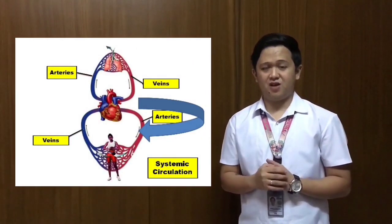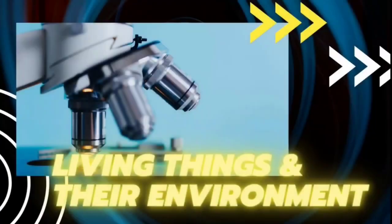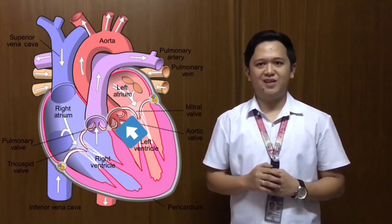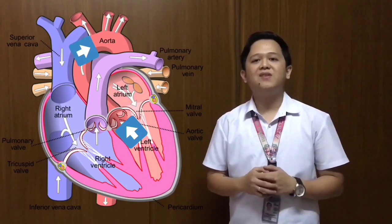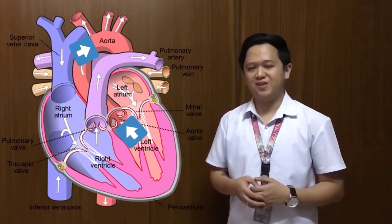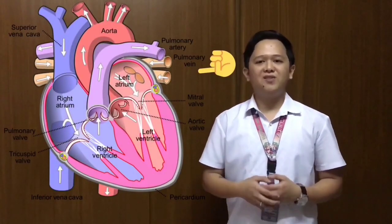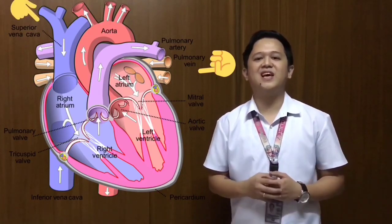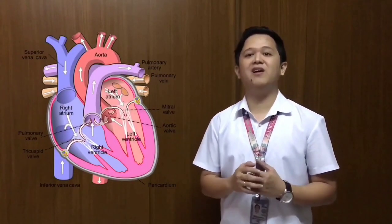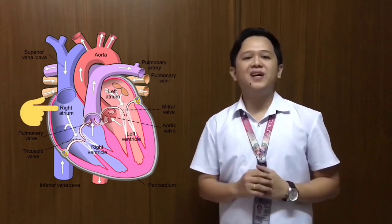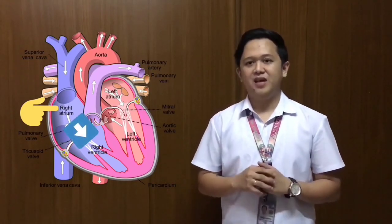Systemic circulation carries oxygen-rich blood from the heart to the organs and tissues. As the left ventricle contracts, oxygen-rich blood is forced into the aorta, which is the largest artery of the body. The aorta carries oxygen-rich blood away from the heart to the smaller arteries, and from here it flows to all the body's organs and tissues. The blood, having given up its oxygen and taken in carbon dioxide from the body's organs and tissues, returns to the heart through the veins. The blood from the area of the head and neck travels to the heart through the superior vena cava. The blood from the abdomen and lower parts of the body flows back through the inferior vena cava. After delivering oxygen to tissues and absorbing wastes such as carbon dioxide, systemic circulation brings the deoxygenated blood to the heart, specifically to the right atrium. As the right atrium contracts, blood is forced into the right ventricle and the process repeats.